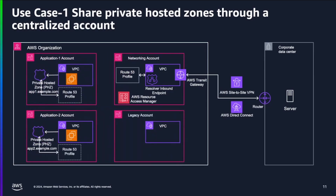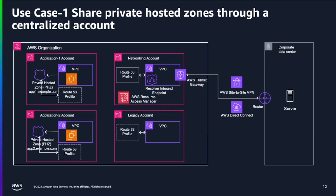Building on the same example, if you have another account in your organization — for example a legacy account — that also needs to access these applications, prior to Route 53 profiles you would have to associate that private hosted zone with that VPC separately. But with this profile, you can just share the profile with the legacy account as well and associate the VPC with the profile. That VPC in the legacy account now has access to the private hosted zones in the other accounts.